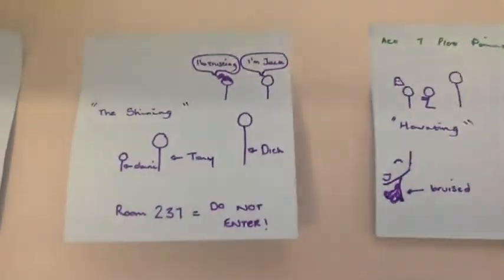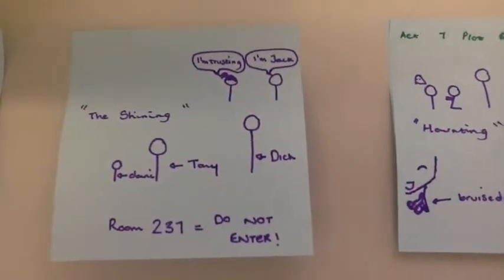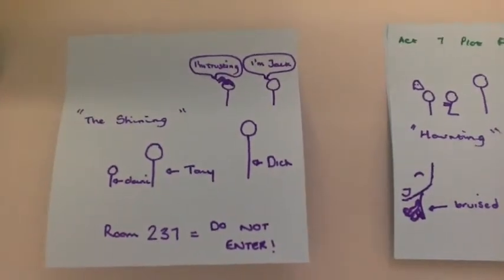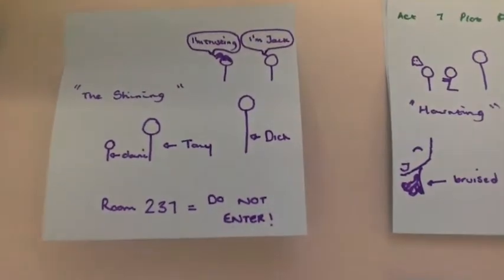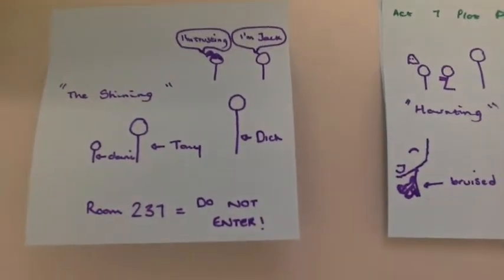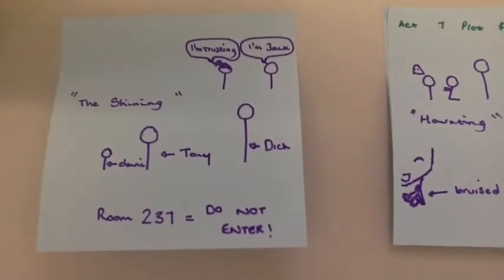We are also shown the relationship between Wendy and Jack and how she is trusting. Also we learn that Danny and Dick have what is called the shining. Dick warns Danny of room 237.